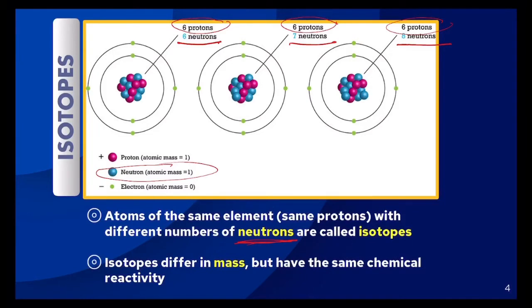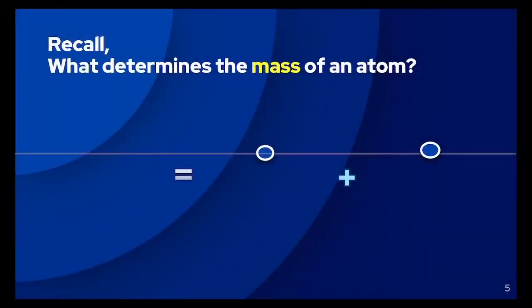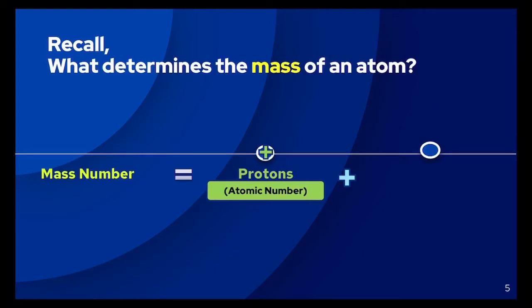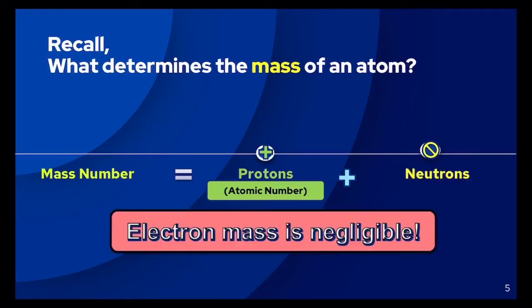Not only do isotopes differ in their number of neutrons, but because of that, they also differ in their mass. To calculate mass, you add the number of protons plus neutrons to get the mass number. Notice that the electrons are also the same — electrons have to do with chemical reactivity, which we will cover in a future unit. The number of protons and neutrons has nothing to do with chemical reactivity, so isotopes will have the same chemical reactivity, just not the same nuclear reactivity. Mass number equals protons (also known as atomic number) plus the number of neutrons. Electrons are 1800 times smaller than a proton or neutron, so their mass is too small to include in calculations.